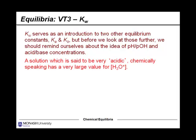A solution which is said to be very acidic, chemically speaking, has a very large value for H3O+. When protons are in solution, they bind very readily to water molecules. So you're far more likely to find H3O+ as your cationic species.